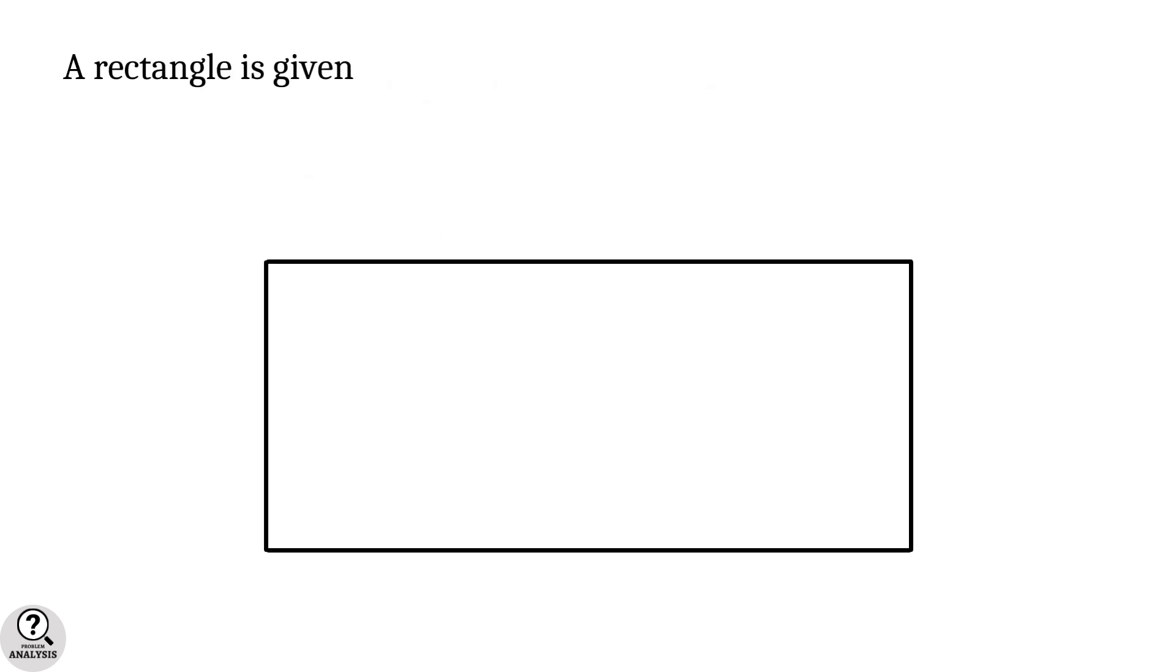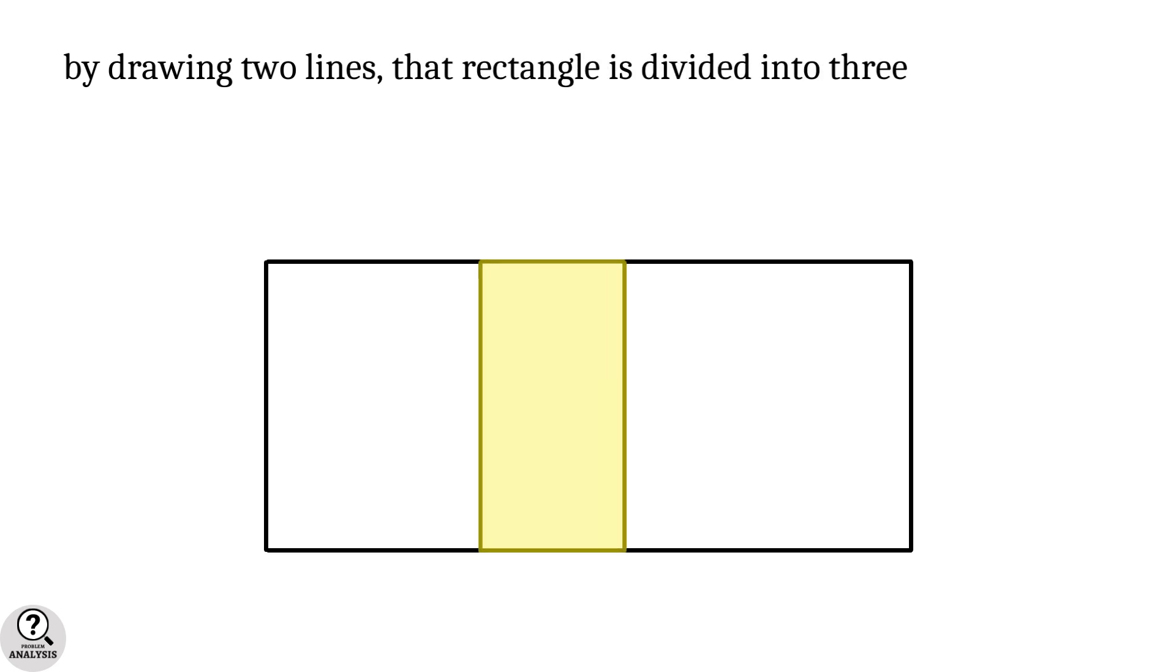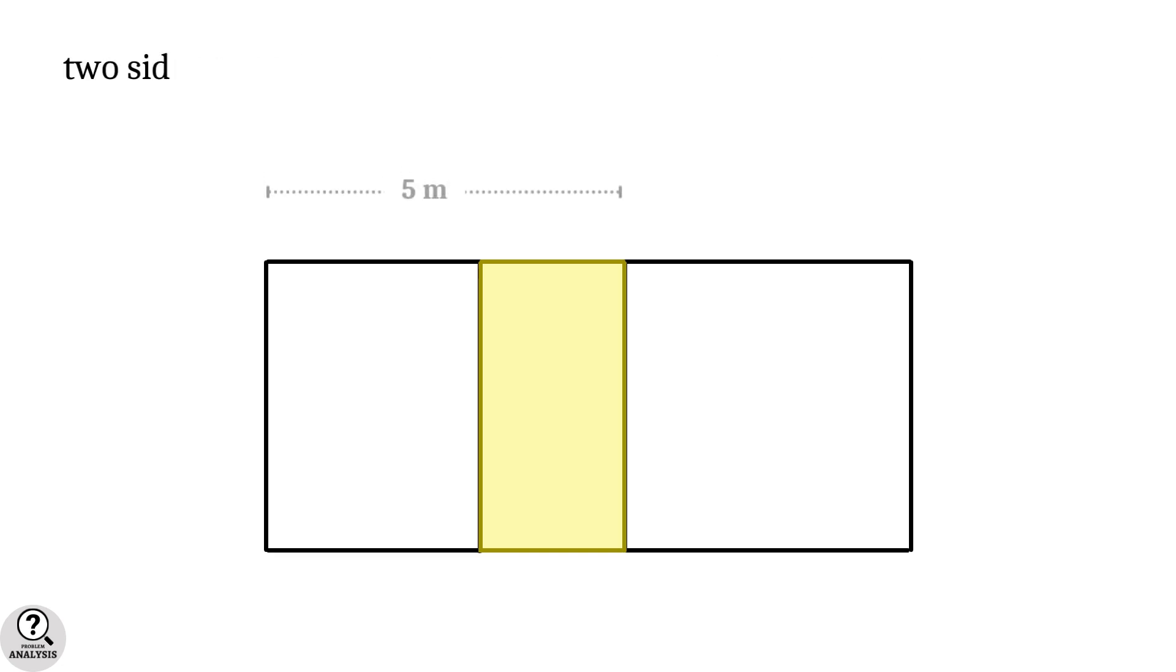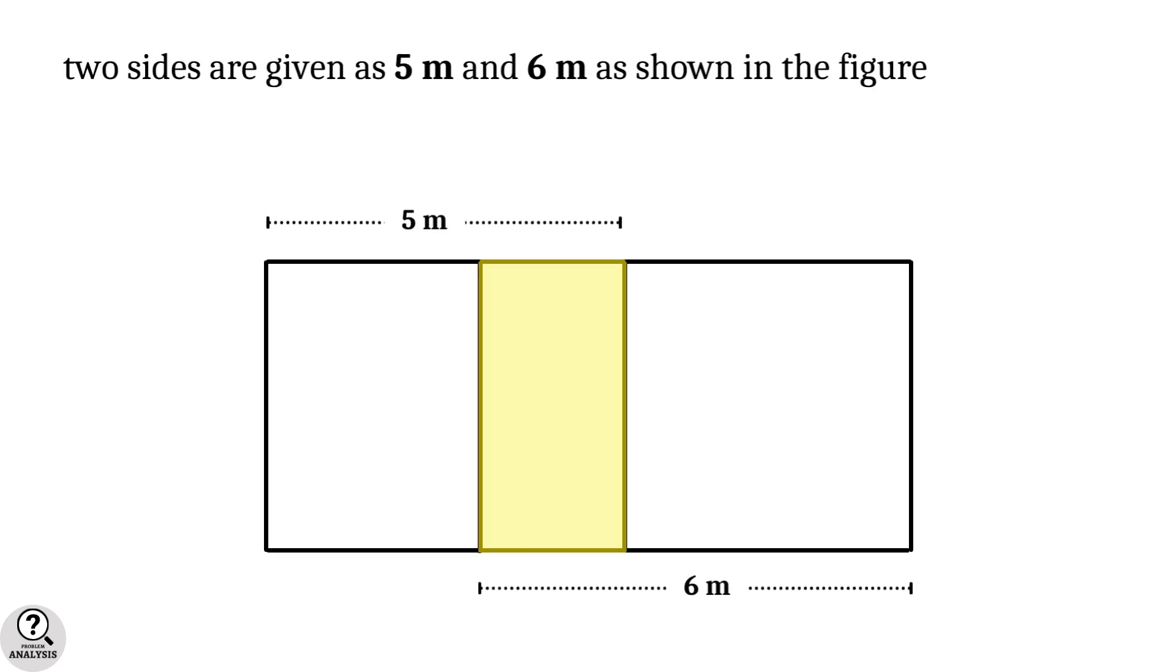We have a rectangle. Inside this rectangle, I am drawing two lines to divide the rectangle into three smaller rectangles. In this whole diagram, two sides are given as five meters and six meters, as shown in the figure.